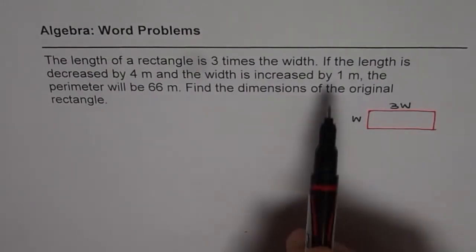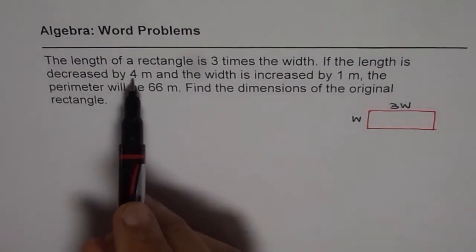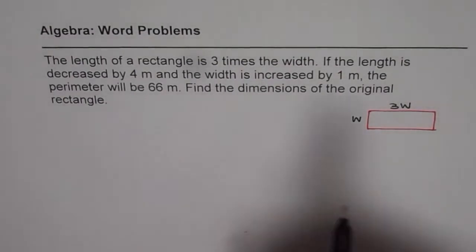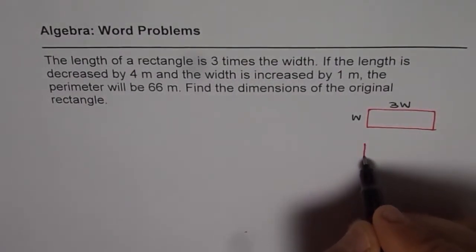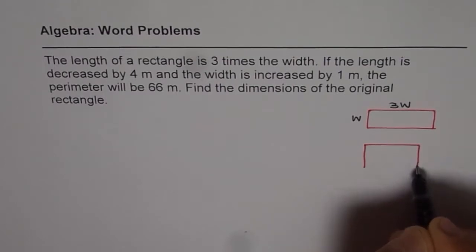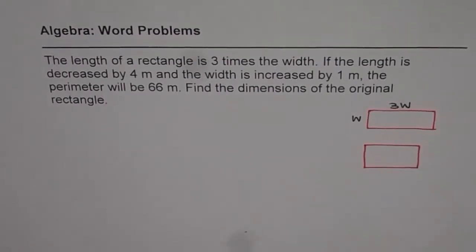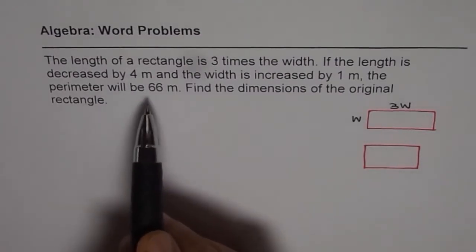Now the next one is, if the length is decreased by four meters and width is increased, let's increase the width and decrease the length. So we get another rectangle. Then what happens? Then the perimeter is 66.